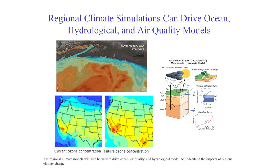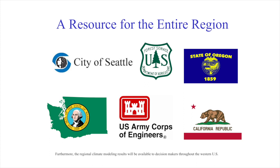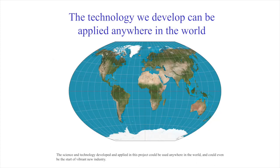The regional climate model will also be used to drive ocean, air quality, and hydrological models to understand the impacts of regional climate change on a wide variety of societal issues. Funds contributing to this project will be mainly used to support graduate and undergraduate students, as well as necessary staff members and computer resources. Furthermore, the regional climate modeling results will be available to decision makers throughout the western United States. The science and technology developed in this project could be used anywhere in the world and could even be the start of a vibrant new industry.